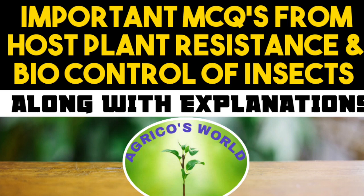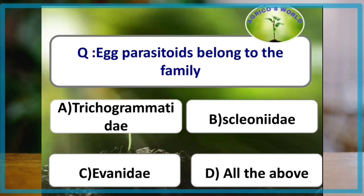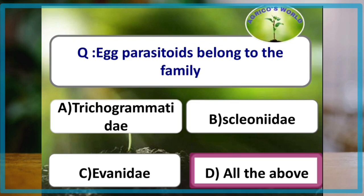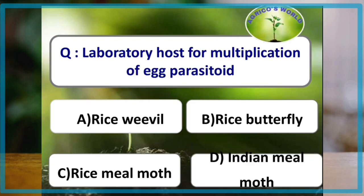Now we are going to discuss some important MCQs related to biocontrol of insects which are asked in most competitive exams. The first question: egg parasitoids belong to the families Trichogrammatidae, Scelionidae, and Eulophidae — all three families contain egg parasitoids. The laboratory host for multiplication of egg parasitoids is the rice meal moth, Corcyra cephalonica.